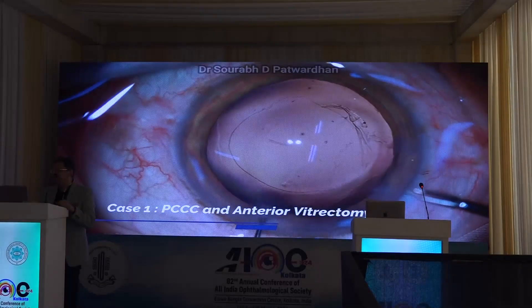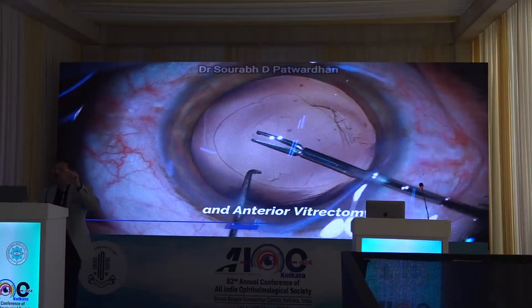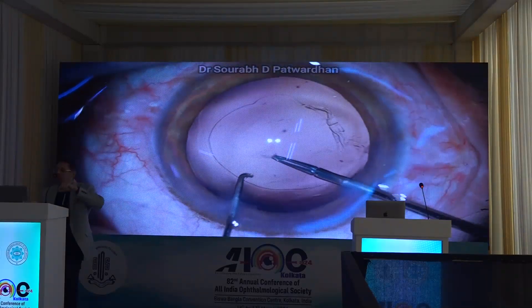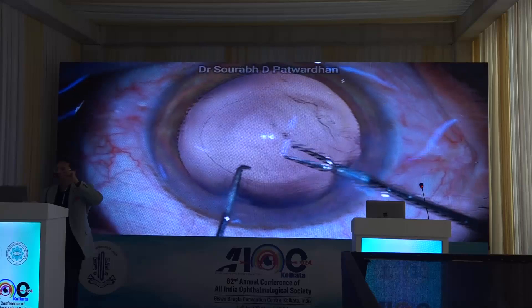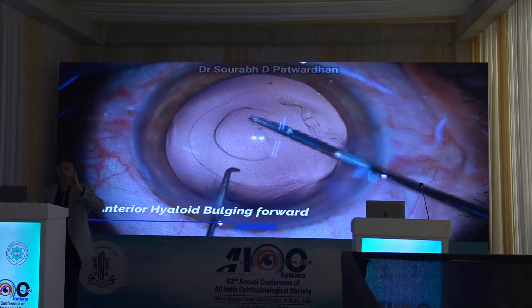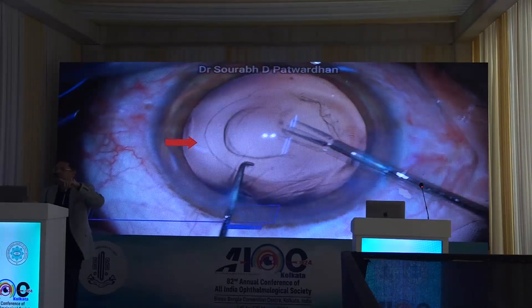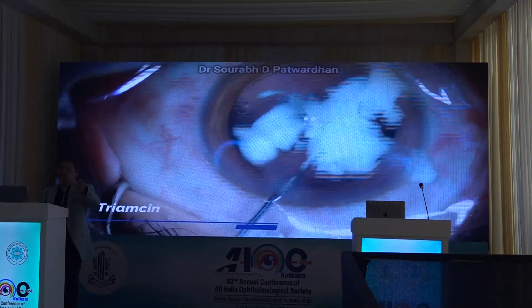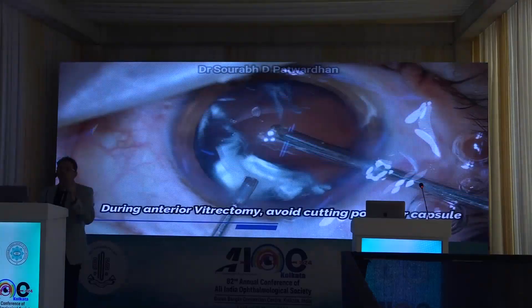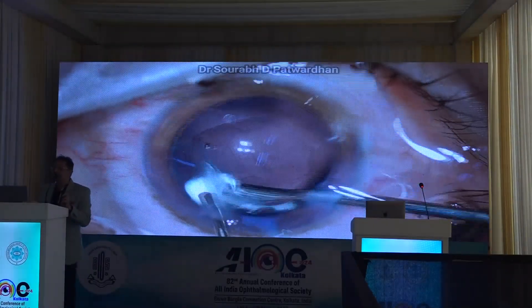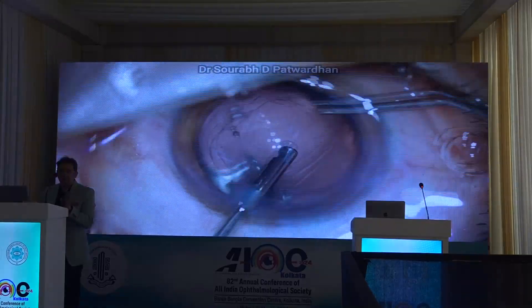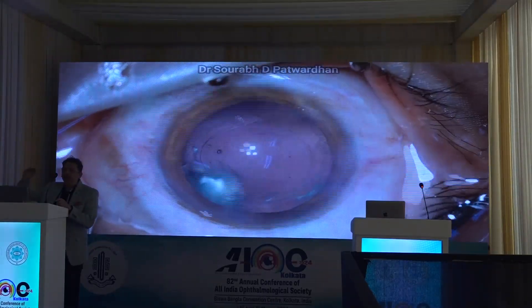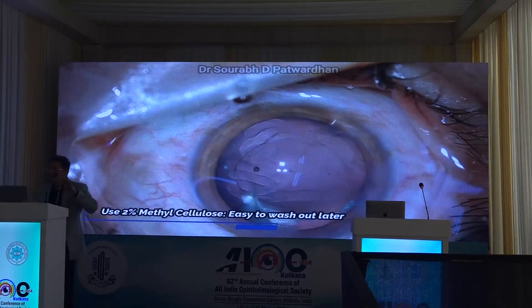Here in this video, there is a PC rupture and the anterior hyaloid is intact. I am trying to convert it into a posterior capsulorhexis. The most important principle is to keep the anterior chamber well maintained. In this clip, I am not doing that and the anterior hyaloid starts prolapsing and the vitreous gets disturbed. The only way forward now is to complete the anterior vitrectomy before placing the IOL in the bag.